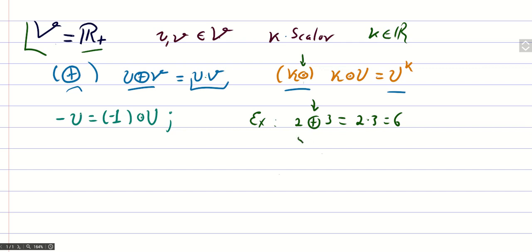In the same way, for example, if we choose 5 plus 4, this will be 5 times 4, that equals 20. So this is how this space looks with respect to the summation.